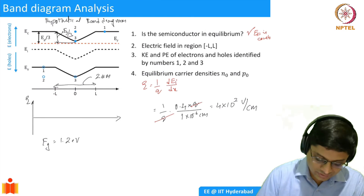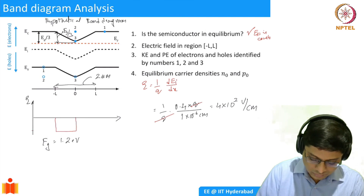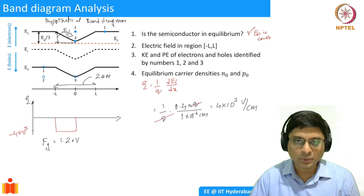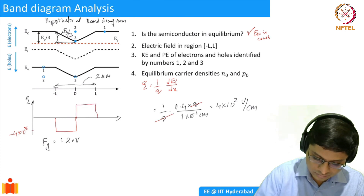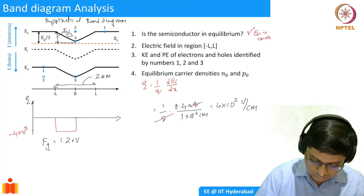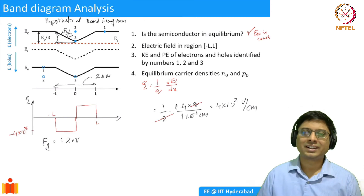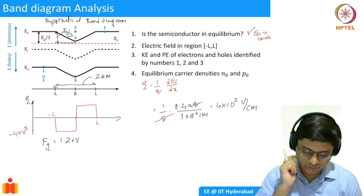The electric field can be plotted: from minus L to 0 it is −4×10³ V/cm, and from 0 to L it is a positive electric field. In real cases you won't get such a sharp step profile — there will be a smoother transition which we'll discuss later.